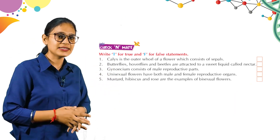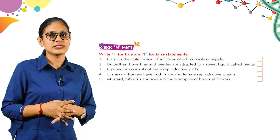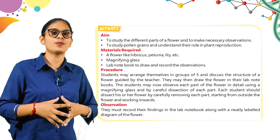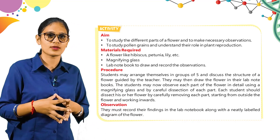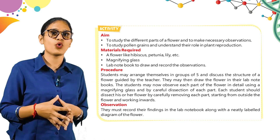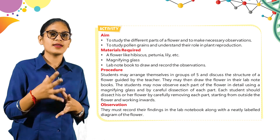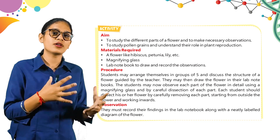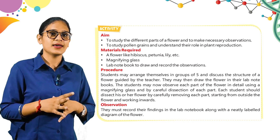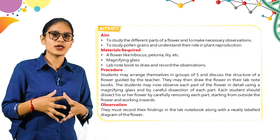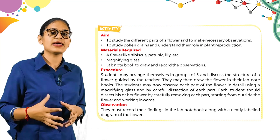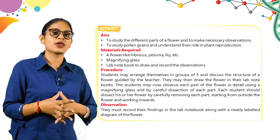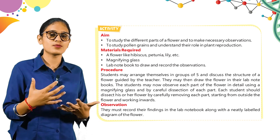Now students, we have a check-and-meet section you can do by yourself. Next, we have an activity. The aim is to study the different parts of a flower and make necessary observations, and to study the pollen grains and understand their role in plant reproduction. Materials required: a flower such as petunia or lily, a magnifying glass, and a lab notebook to draw and record observations.